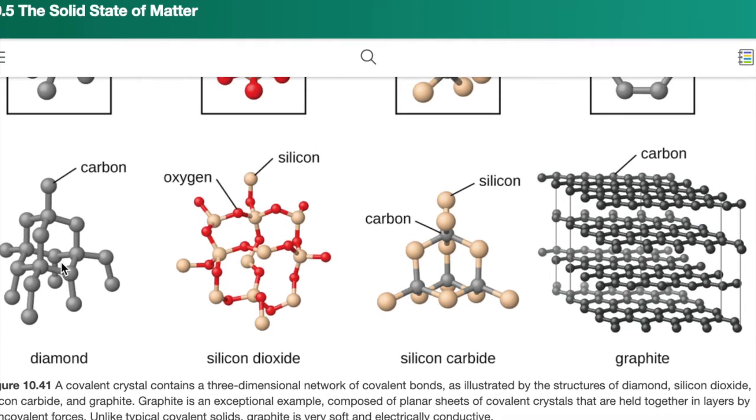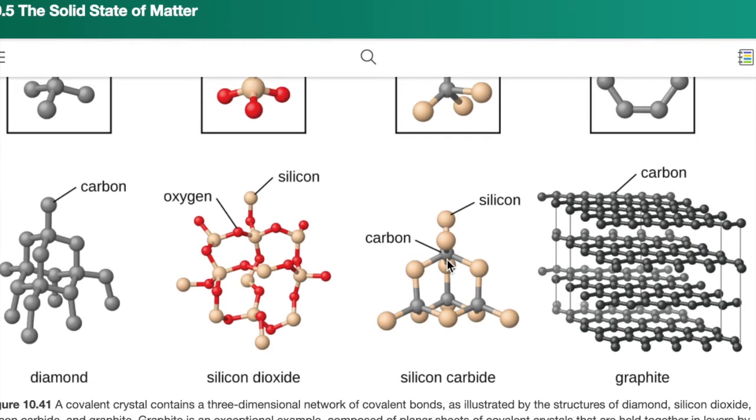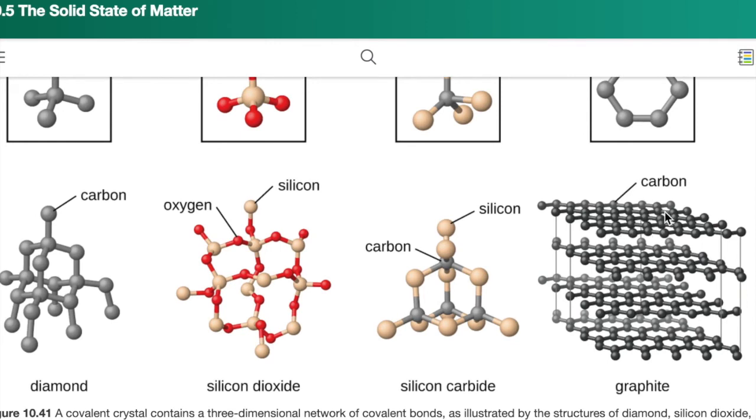So we have a few examples of that. We have diamond, we have silicon dioxide, which is in the mineral quartz and lots of other minerals. We have silicon carbide here with carbon bonded to four silicon and then each silicon bonded to four carbon and just extended throughout that structure.